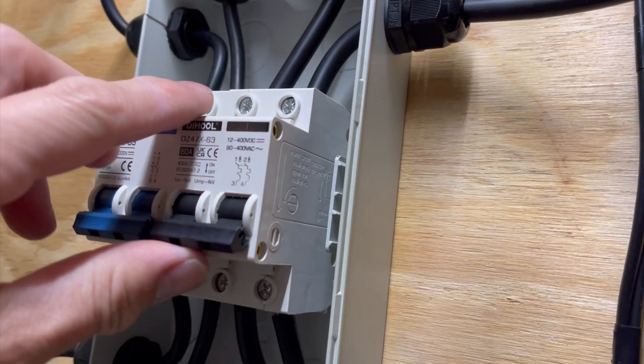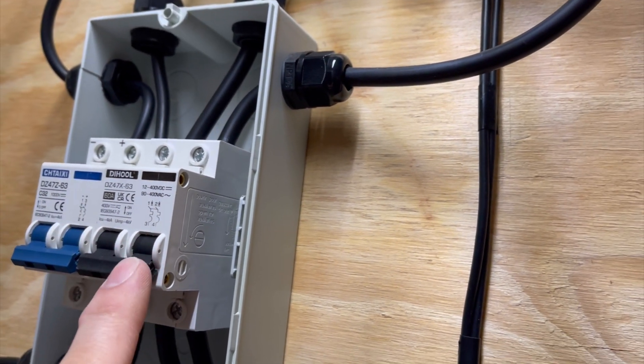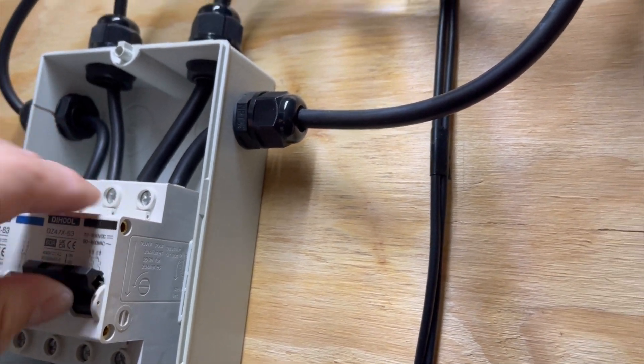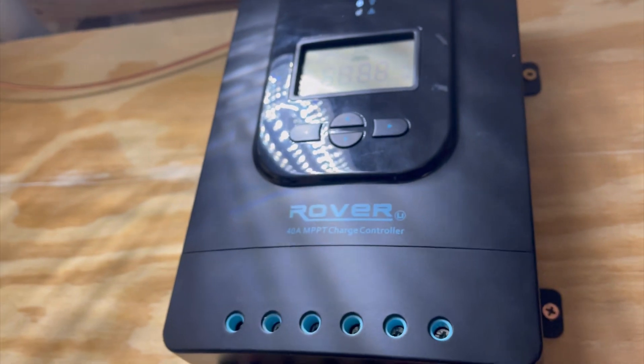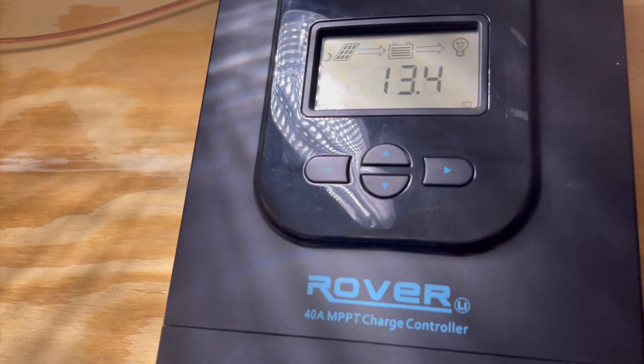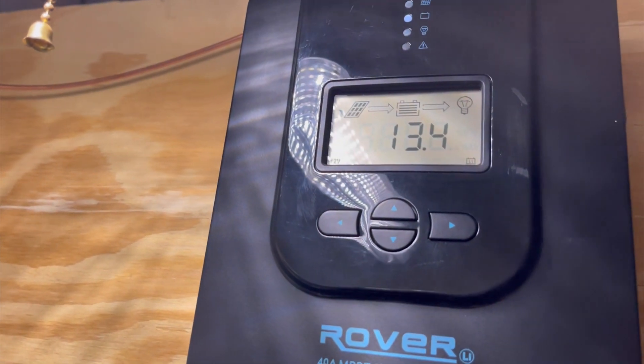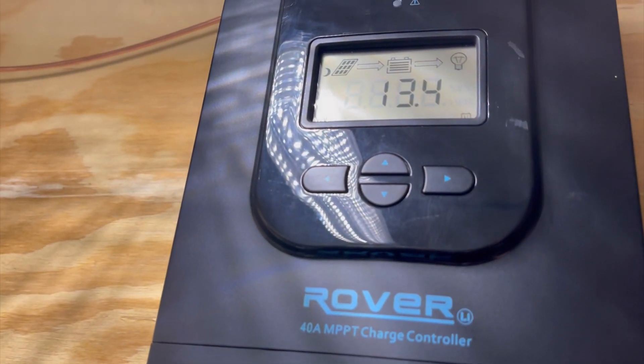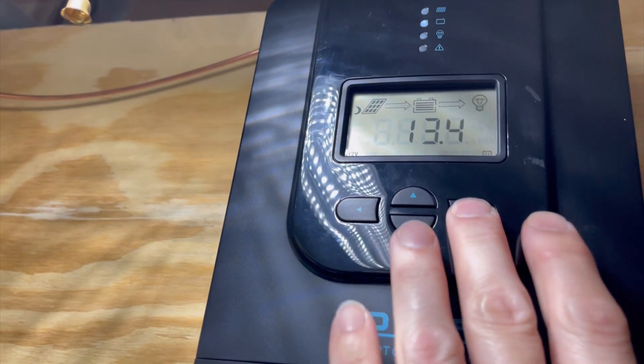The first thing you want to do is turn on your battery voltage. Whenever you're connecting a charge controller, you always got the battery voltage on first. We got 13.3 volts and you see the solar panel has a moon next to it, so that means the solar panels are not on right now.